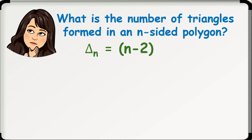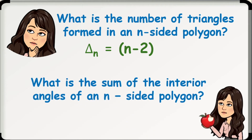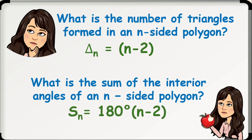Next, what is the sum of the interior angles of an n-sided polygon? Since a polygon with n sides has n-2 triangles formed, it follows that the sum of its interior angles is equal to the product of n-2 and 180 degrees. So our formula is: S sub n is equal to 180 degrees times the quantity of n-2, where n is the number of sides of the given polygon.